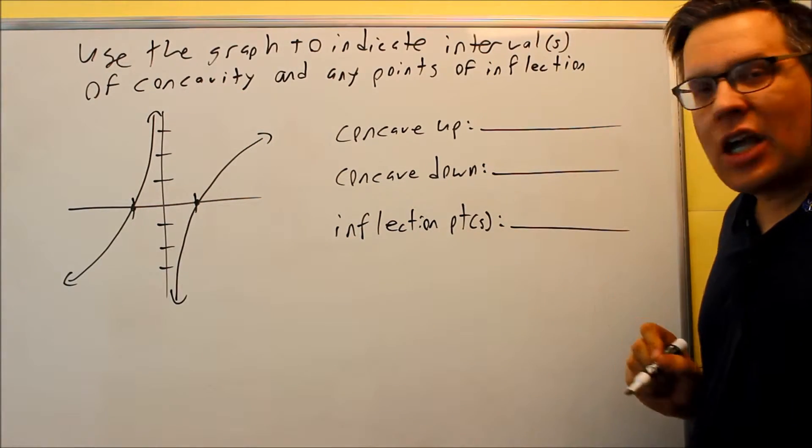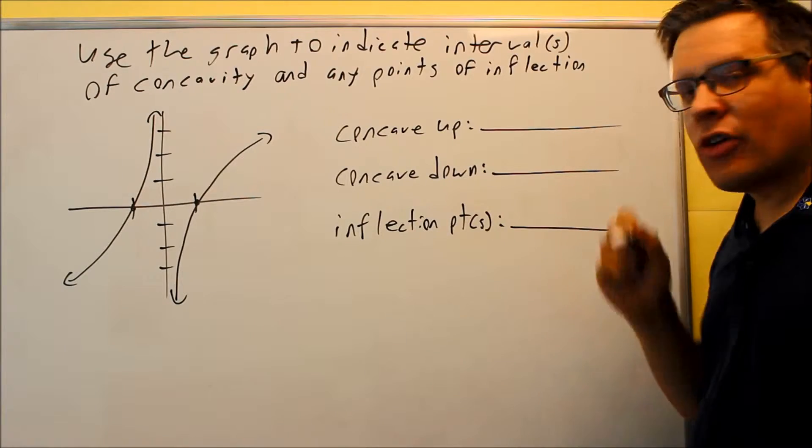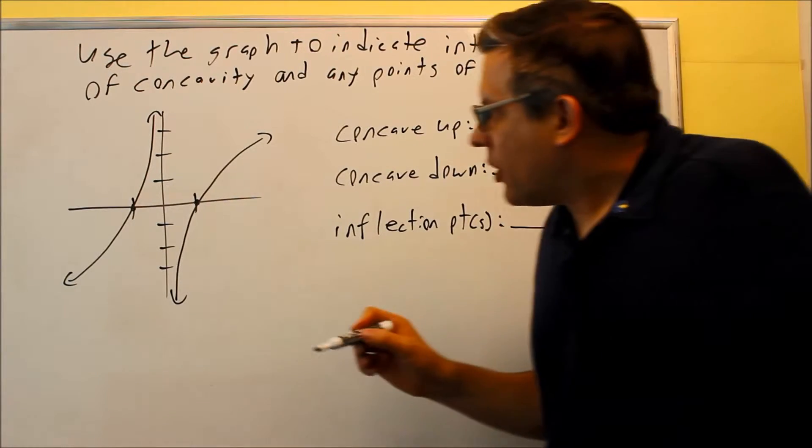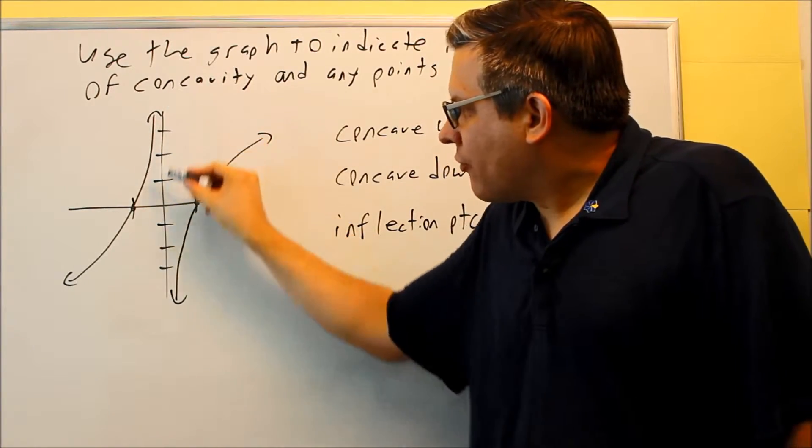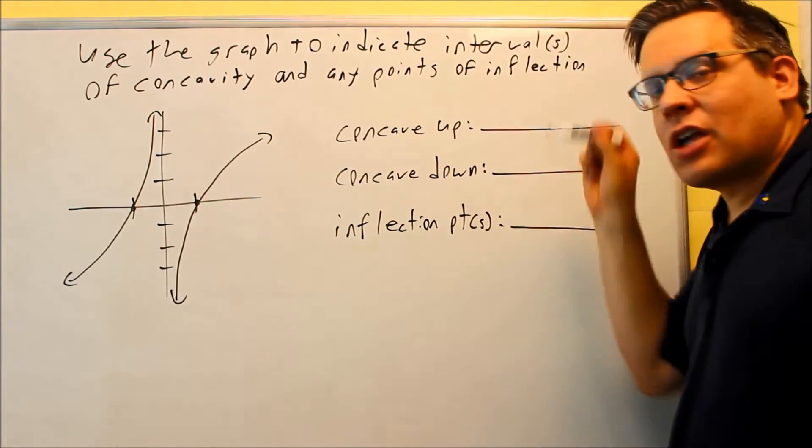We're looking for where it's concave up and concave down. Again, concave up means the graph is curving or opening up. That actually would be happening right here in the first section. So when I indicate the interval on this, it's going to be from negative infinity to 0.